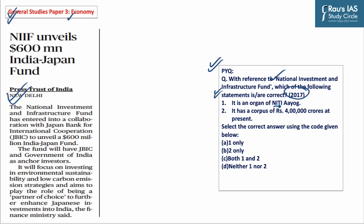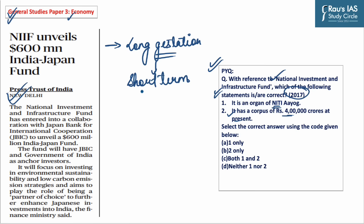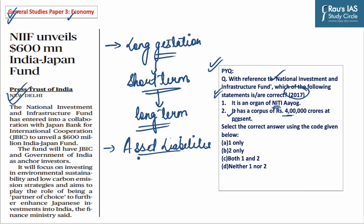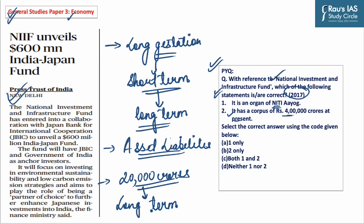The answer for this previous question will be given at the end of the discussion. Let us look at the need for NIIF. Infrastructure projects frequently exhibit long gestation periods, creating challenges for financial institutions to manage their short-term liabilities with long-term cash flow profiles. To avoid the asset-liability mismatch faced by banks in funding infrastructure projects, the government constituted NIIF with an authorized capital of 20,000 crores to provide long-term institutional investment support to infrastructure projects in India.